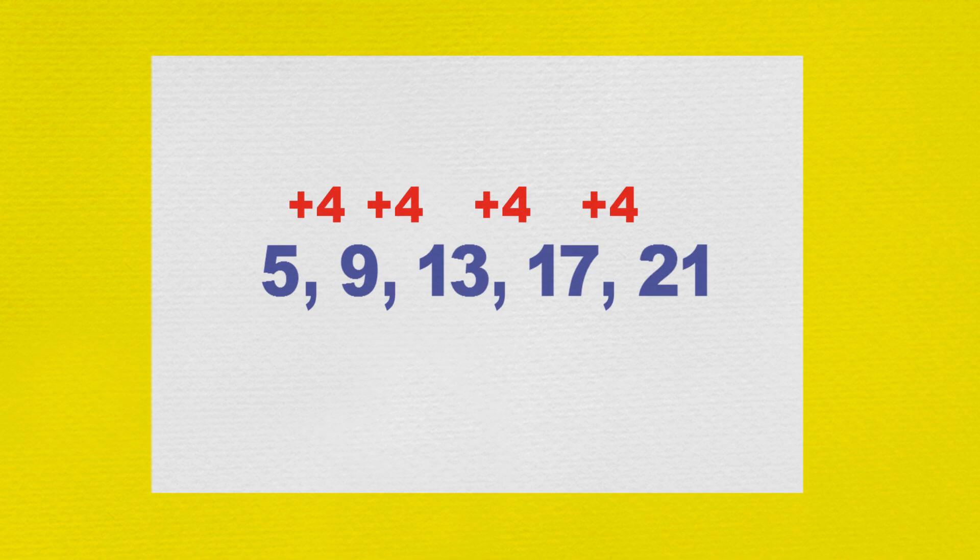So, next question. Describe the following number pattern and tell me the missing number. And Matins wrote on the paper: three, eight, thirteen, blank, twenty-three, twenty-eight.